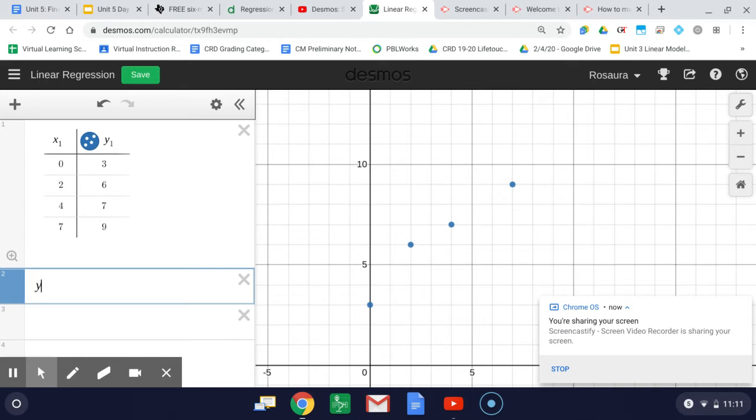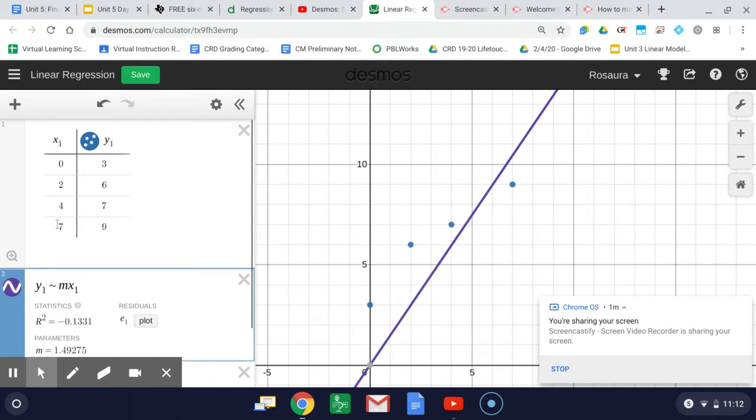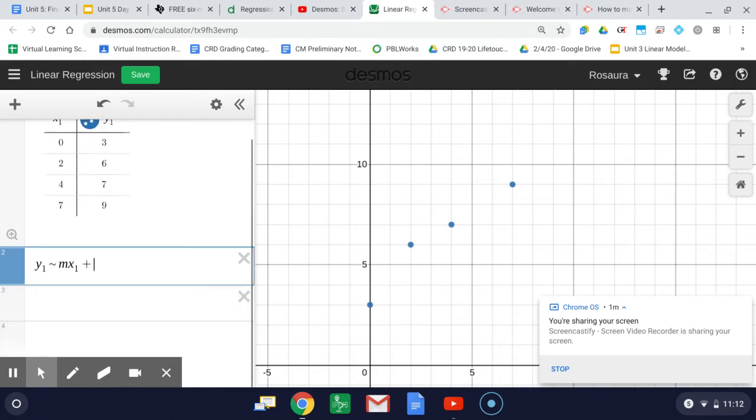you type in y1, so that's saying I want the y values to help me find the regression, and you put the tilde, which is shift and then the button on top of tab, and then m for the slope, and then x1 - you're telling Desmos I want to use the values from the column labeled x1, plus b.